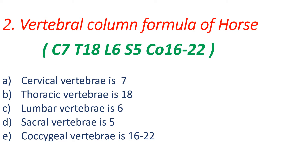Next is the vertebral column formula of horse. In the case of horse: C7, T18, L6, S5, and coccygeal 16 to 22. You must remember that in all mammals, the cervical vertebrae number is 7. And in the case of birds — poultry or fowl — the cervical vertebrae number is 14. So the horse's vertebral formula is: cervical 7, thoracic 18, lumbar 6, sacral 5, and coccygeal 16 to 22.